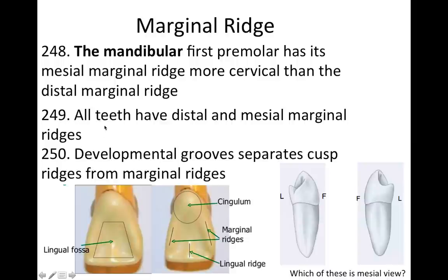All teeth have distal and mesial marginal ridges, even anterior teeth. Here's a picture of an anterior tooth and you can see it has marginal ridges. Developmental grooves separate cusp ridges from marginal ridges. If you flip over the central incisor, there are developmental grooves in the front that show where the lobes formed and where the cusps are. On a posterior tooth like the lower first molar, you'd be looking at two buccal grooves and a lingual groove — those are developmental grooves.